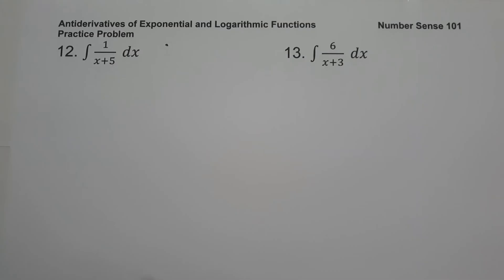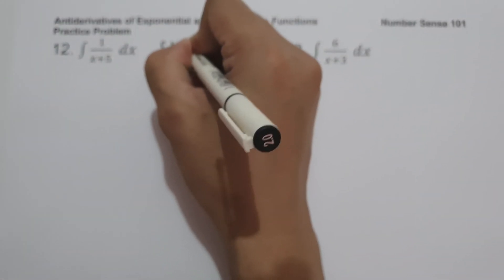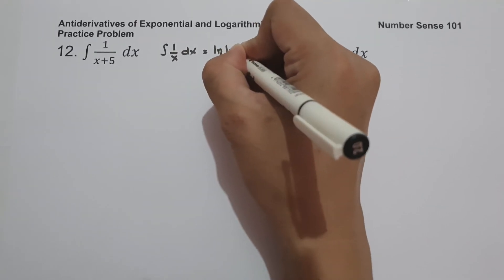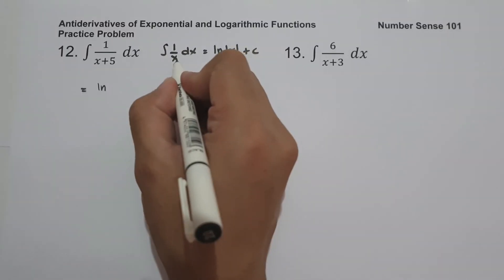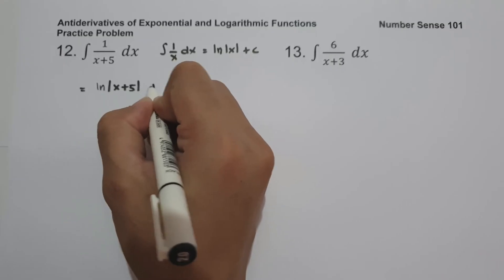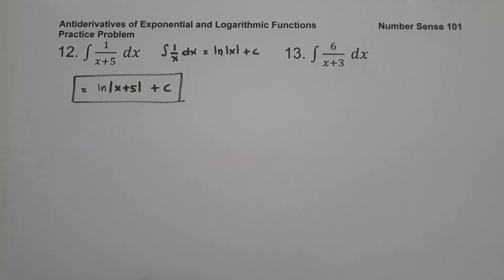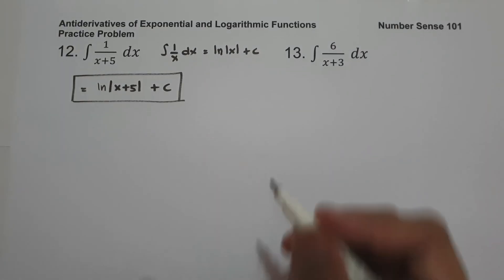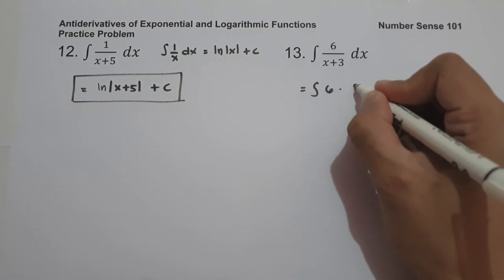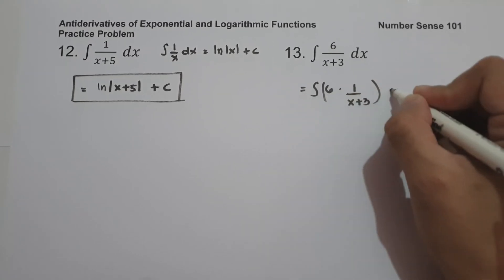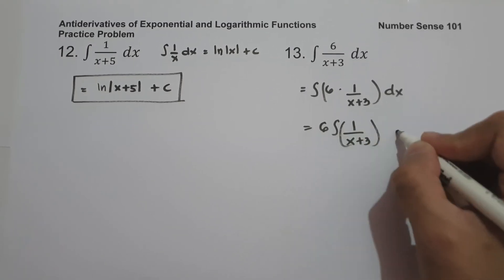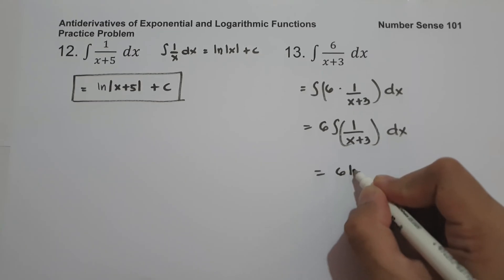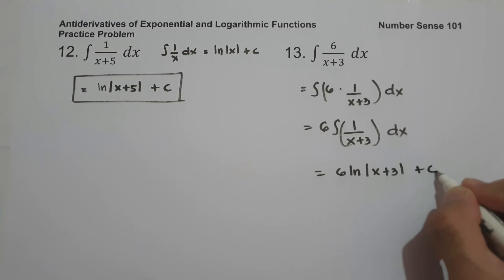On number twelve, the antiderivative of 1/(x+5) dx is in the form of the antiderivative of 1/x dx, so the answer is ln|x+5| + c. On number thirteen, the antiderivative of 6/(x+3) dx: we rewrite as 6 · (1/(x+3)), move 6 in front, and get 6 times the antiderivative of 1/(x+3) dx, which equals 6 ln|x+3| + c.